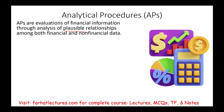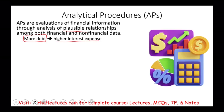For example, if we happen to carry more debt, we expect to have higher interest expense. Given everything else equal, if you have more debt and assume the interest rate stays the same or is trending up, we expect to see more interest expense. That's a relationship — more debt, more interest expense. If we purchase more fixed assets, we expect to have higher depreciation.